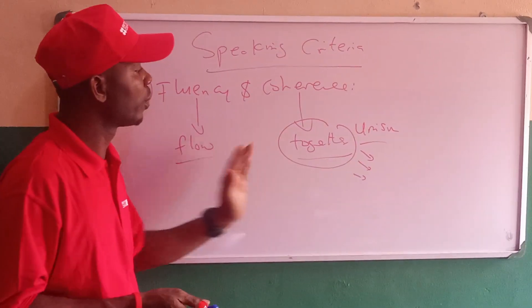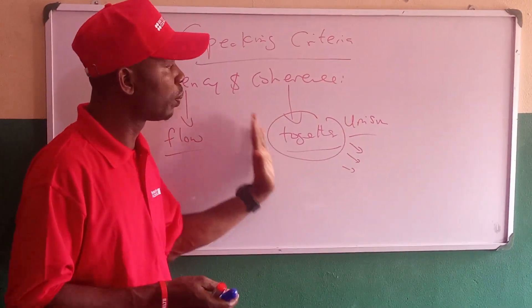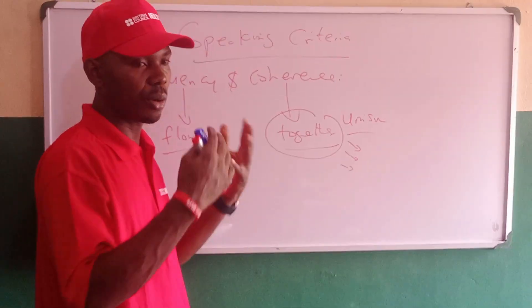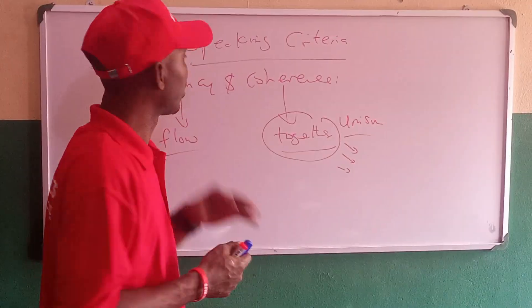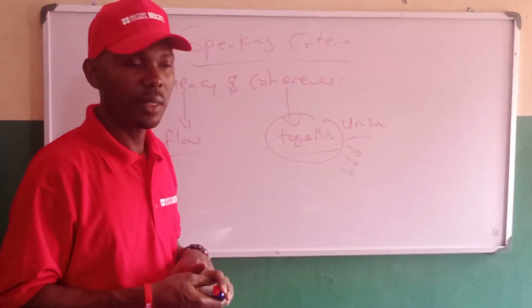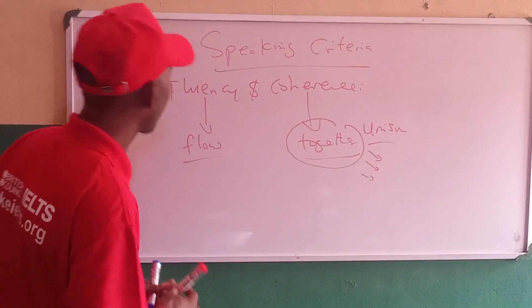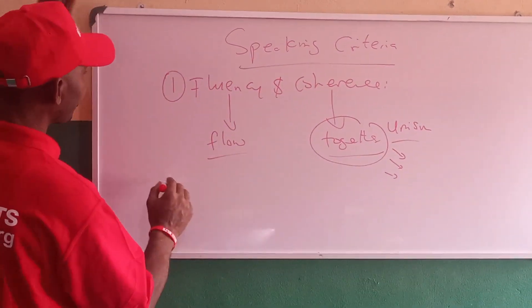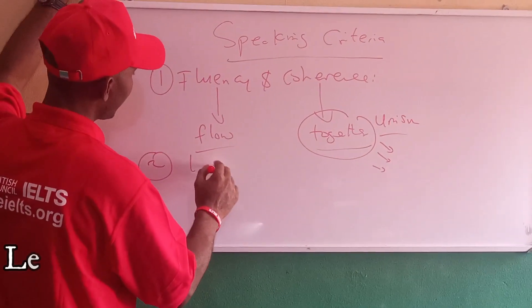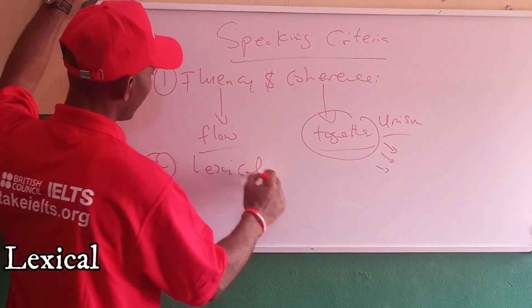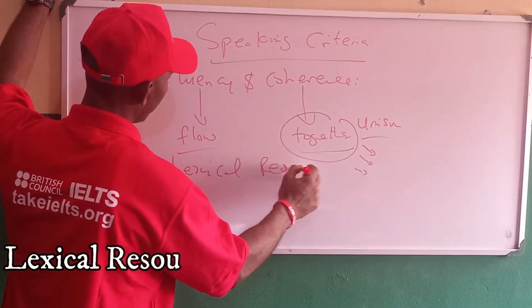So the ability to flow and maintain that logical progression or unison as you speak is one of the key things that is looked at. The second criterion is called lexical resource.